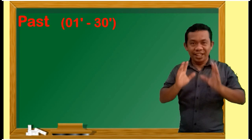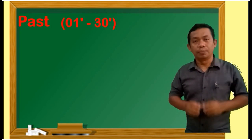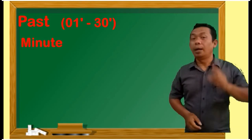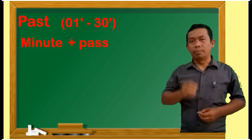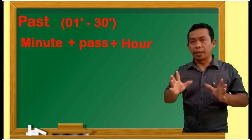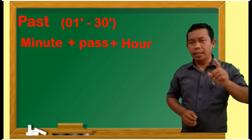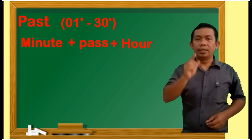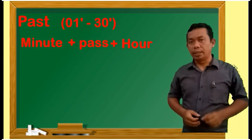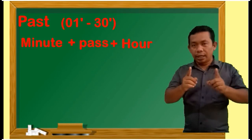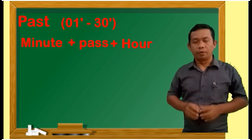But in English it is different. Di dalam bahasa Inggris, yang pertama kita sebutkan bukan jamnya, tetapi menitnya dulu, kemudian diikuti kata 'past', baru diikuti oleh jamnya. Dan yang perlu diingat, menit dan jam yang kita sebutkan adalah angka yang tertulis atau yang ditunjukkan di dalam jam tersebut.